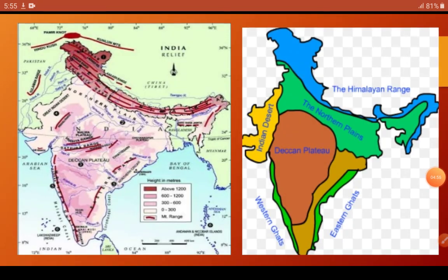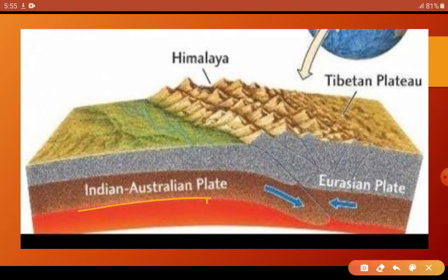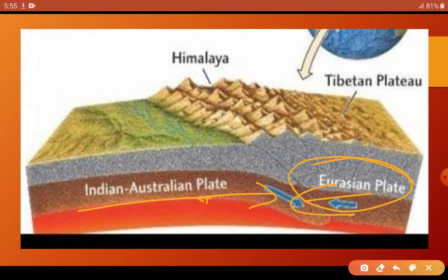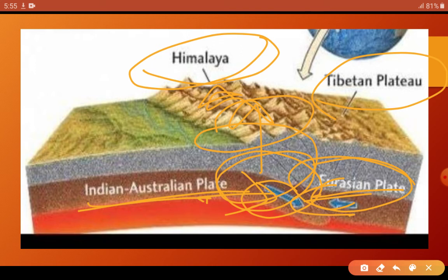Now we will discuss the formation of the Himalayas. The Himalaya was formed when the Indian-Australian plate and the Eurasian plate moved toward each other. When two plates move toward each other and attract, which boundary becomes a convergent boundary? If opposite, it is divergent boundary. If parallel, it is transform boundary. Here the plates converged and the landmass area folded upward, forming the Himalaya and the Tibetan Plateau.